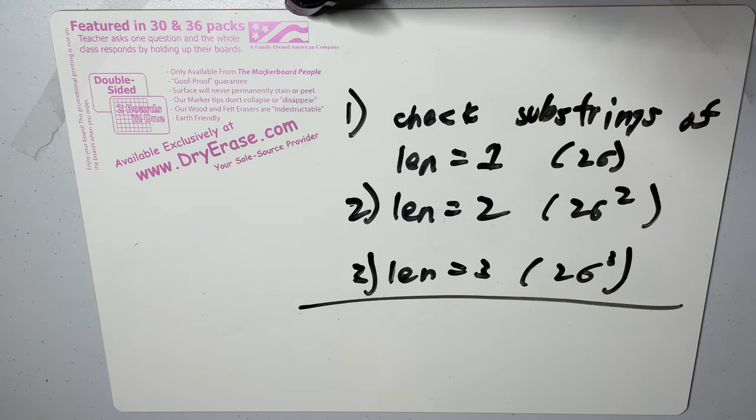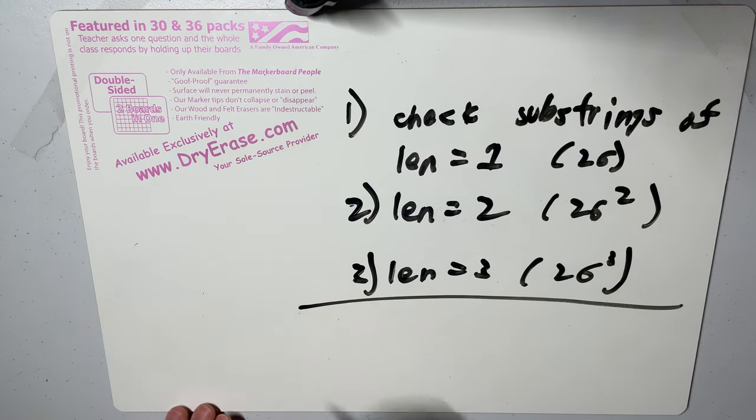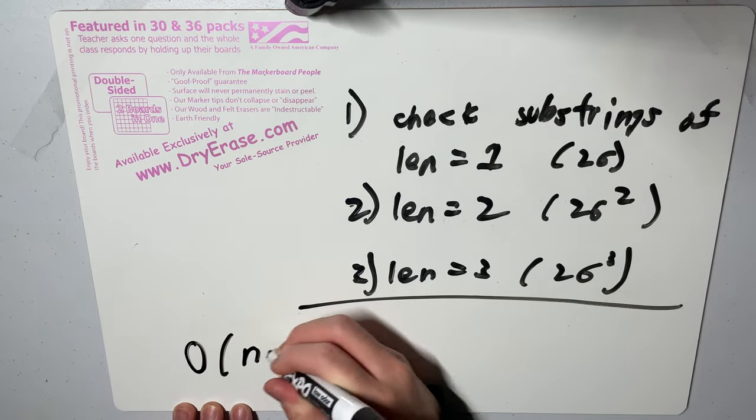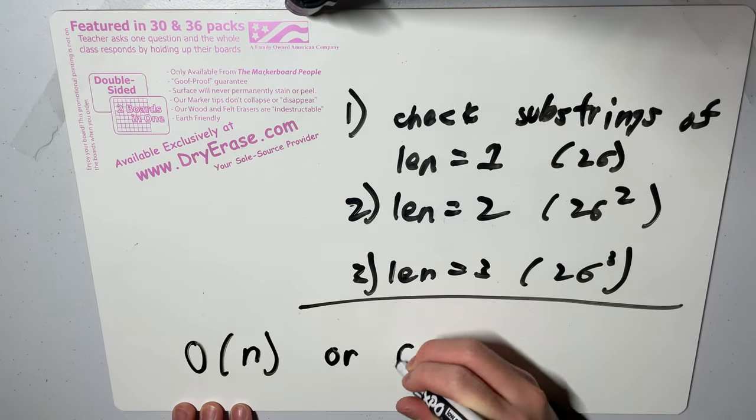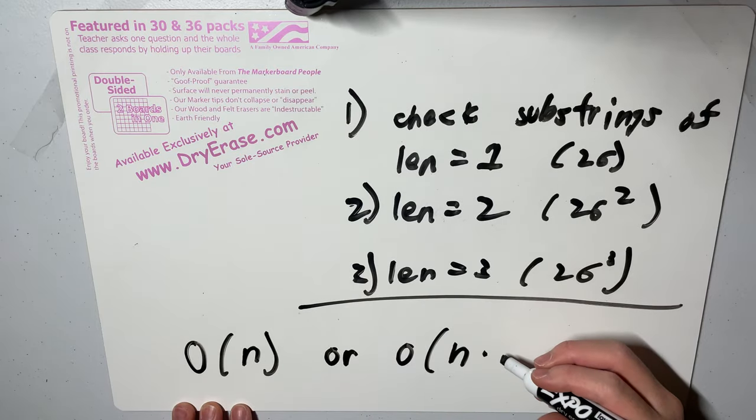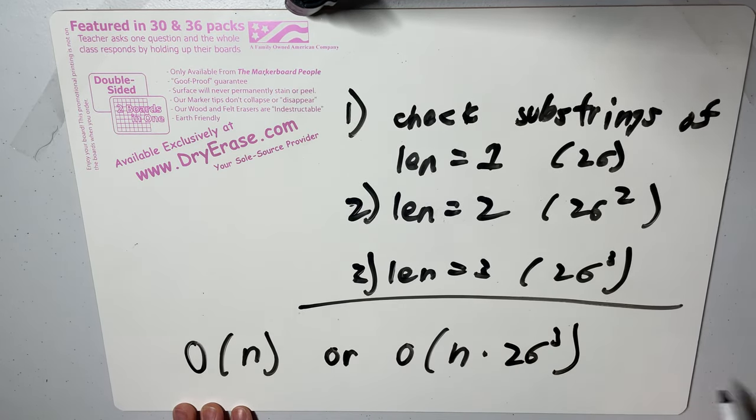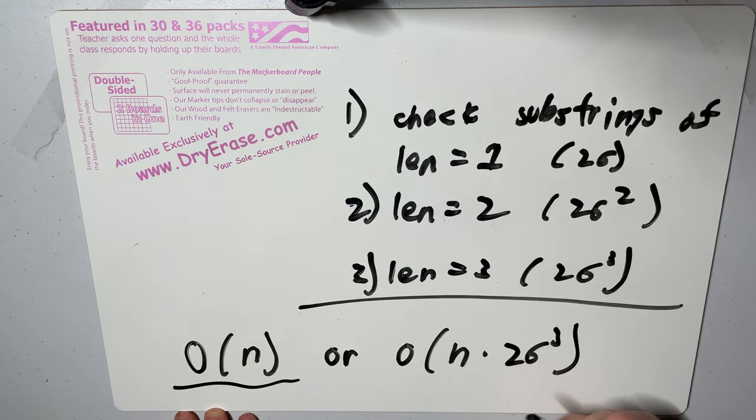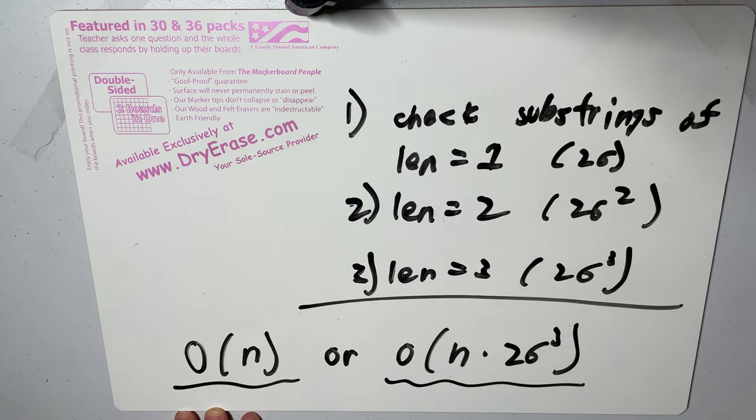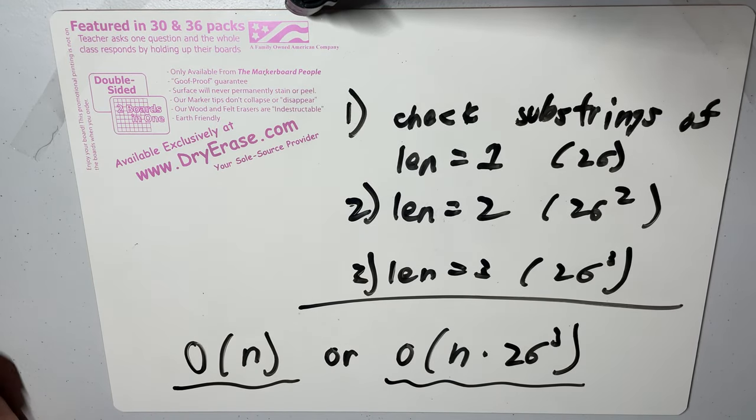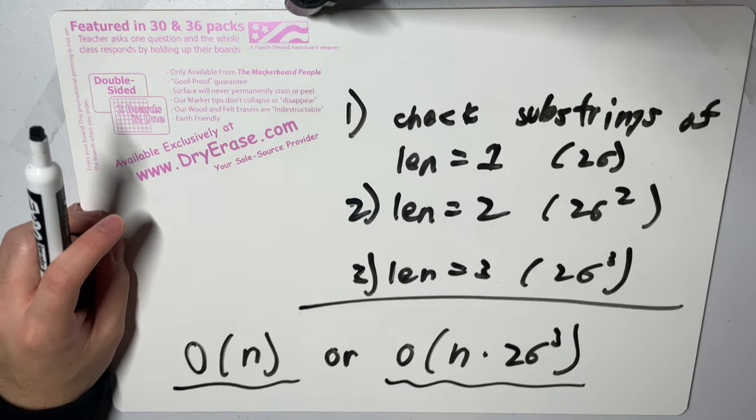So that's pretty much how you solve Problem B. The final complexity, depending on how you implement it, will either look something like O(n) or O(n) times some constant factor that's close to 26 cubed. Because n is only a thousand, this will definitely work, and with good implementation should run in time as well. So yeah, that's how you solve Problem B of CF Round 724.